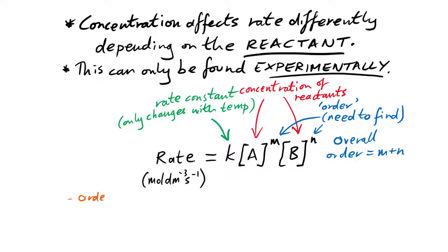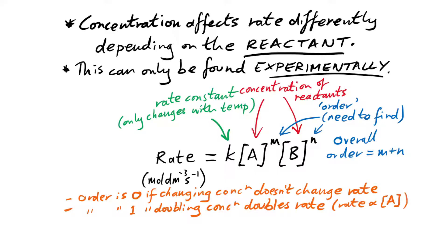So what does order mean? Well, it tells you how much the concentration of the reactant affects the rate. The order is zero if you change the concentration of a reactant, but it doesn't change the rate of reaction. In other words, that reactant doesn't play a part in what the rate of reaction is. The order is one if you double the concentration of a reactant and you find that it doubles the rate. So we can say that the rate is proportional to the concentration of that reactant. The order is two if doubling the concentration quadruples the rate. That means that the rate is proportional to the concentration squared.